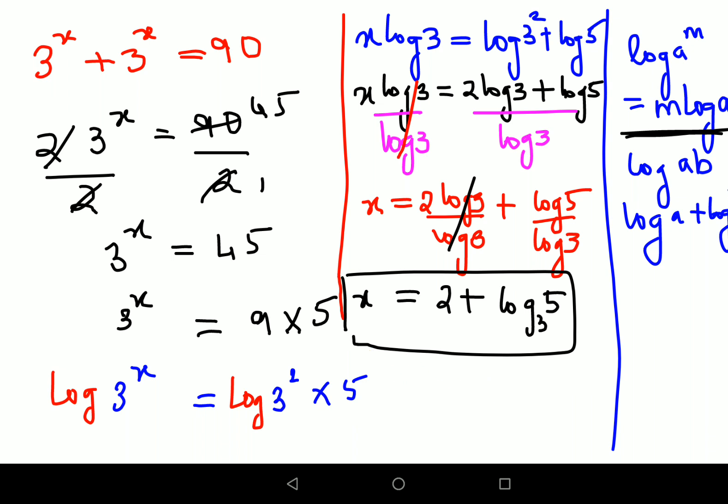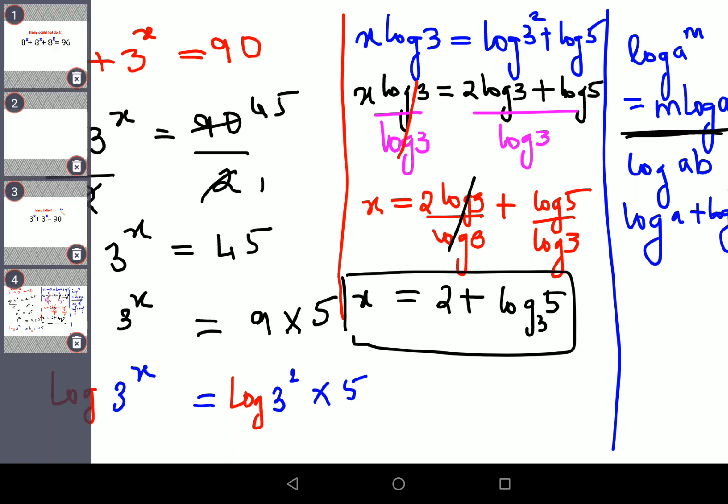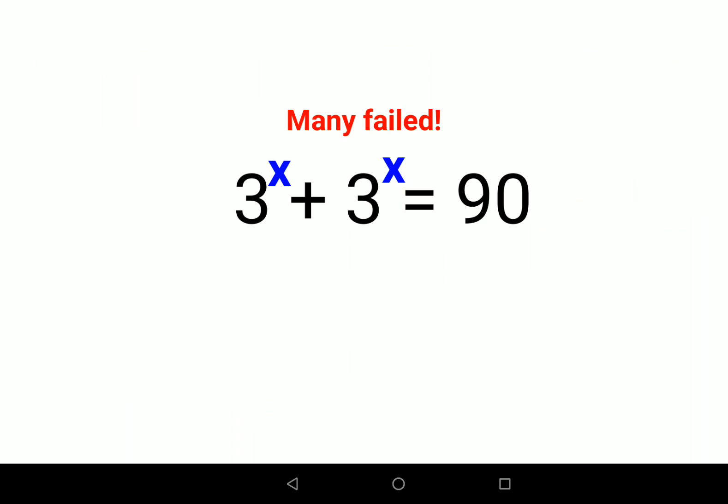Now let's get back to the original question. We know the value of x is 2 + log 5 to the base 3. I'll put the value here: 3^x plus 3^x. Instead of x, we'll put 3^(2 + log5 base 3).